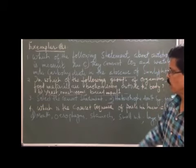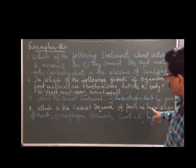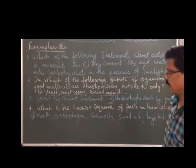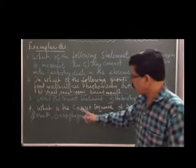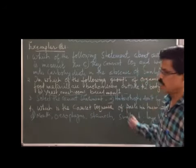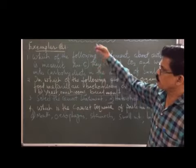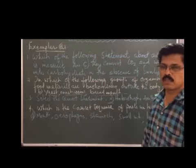Now the fourth and the last one: which is the correct sequence of parts of human alimentary canal? That is quite an easy one. Mouth, esophagus, stomach, small intestine, large intestine. These are the four excellent questions.